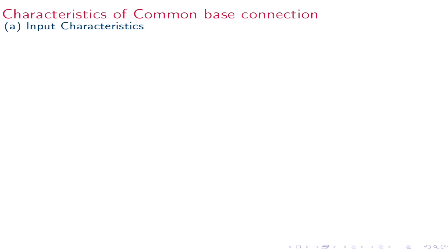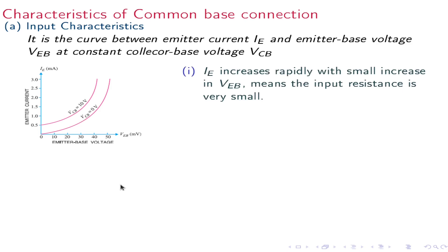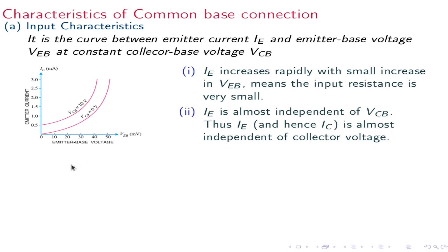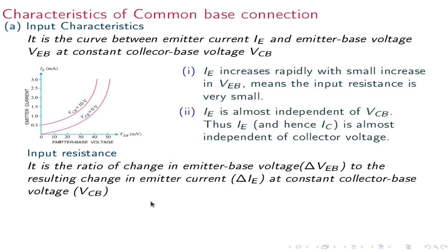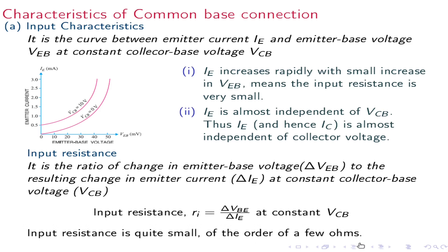Now let us discuss the characteristics of the common base connection. The input characteristic is the curve connecting the emitter current and emitter-base voltage at constant VCB (collector-base voltage). The emitter current increases rapidly with a small increase in Vbe, meaning the input resistance is very small, and Ie is almost independent of VCB. Input resistance Ri equals delta Vbe divided by delta Ie at constant VCB. Its value is of the order of a few ohms.